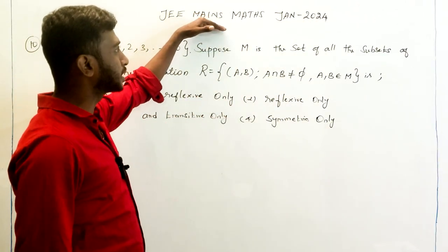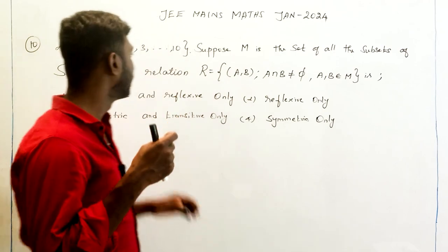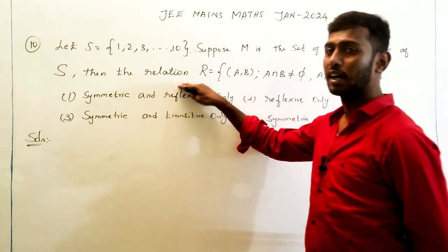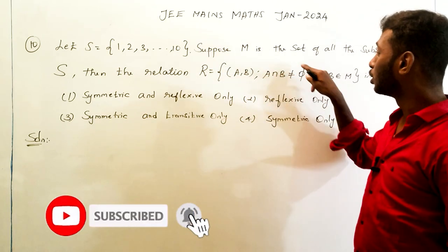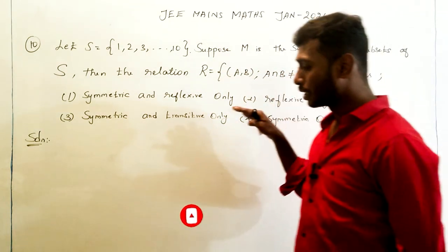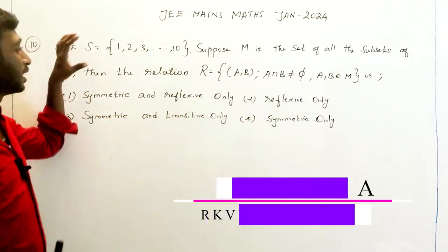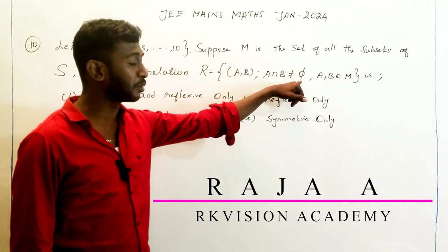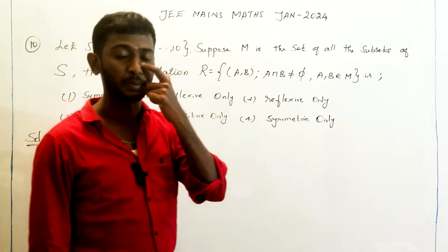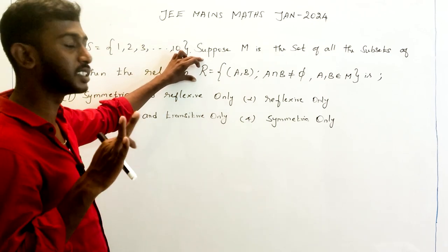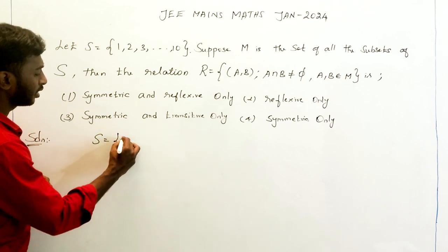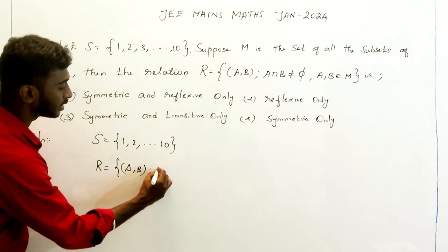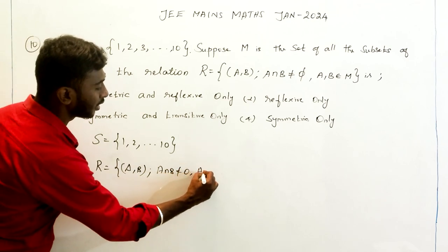Hi students, today we are going to see JEE Main January 2024 question number 10. Let S = {1, 2, 3, ..., 10}. Suppose M is the set of all subsets of S. Then the relation R = {(A, B) : A ∩ B ≠ ∅, A and B belong to M}. We are going to check whether R is symmetric, reflexive, or transitive.